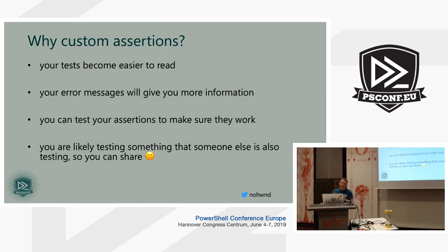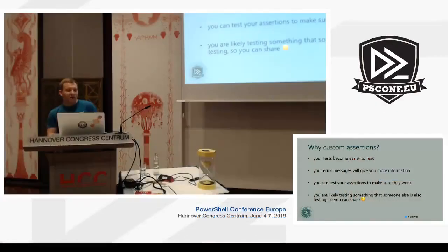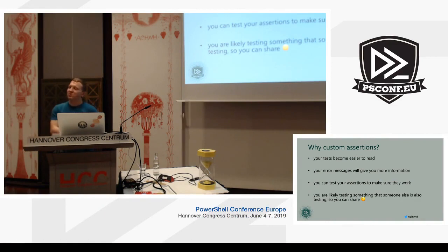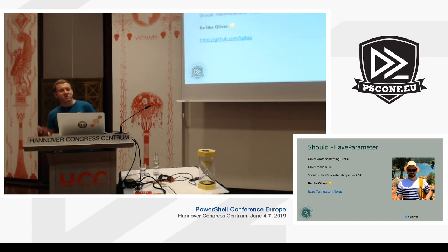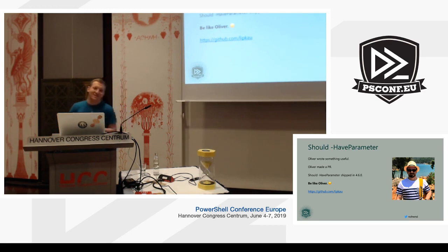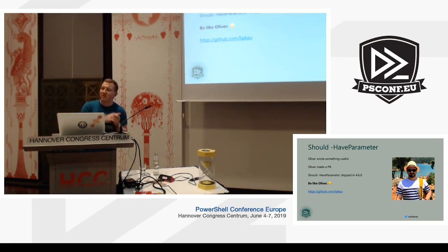The promise of custom assertions is that your tests become easier to read, your error messages give more information when tests fail on the build server, and you can test the assertions themselves. If you create something generic, you can share it with others and improve it together. Oliver asked about the Has Parameter assertion I showed, we talked about it, he wrote it, made it compatible with PowerShell version 2, and now it ships with Pester in version 4.6. Be like Oliver — if you write something useful, share it.